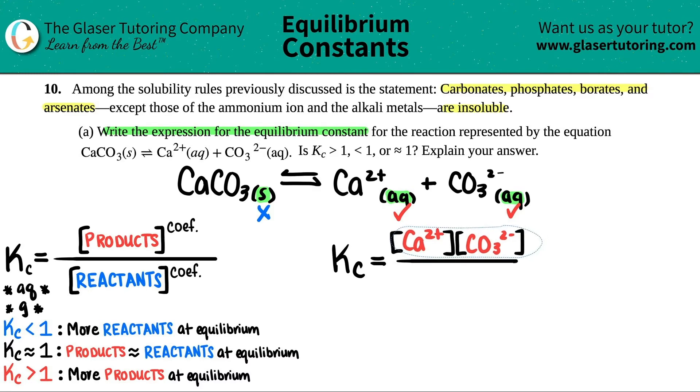Now I just want to say that you have to raise them to the coefficients, aka the big numbers in the front. But since there was no number for calcium, and there was no number for the carbonate, remember, it's just a one and a one. So I don't have to raise these to the first. Anything raised to the first is itself.